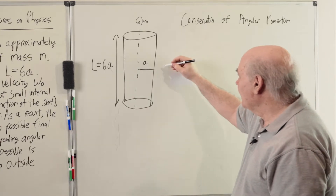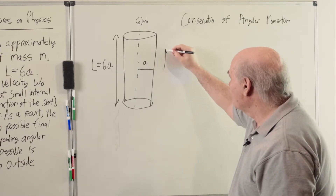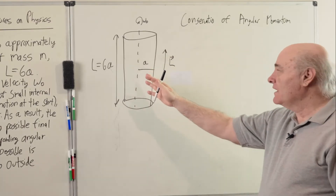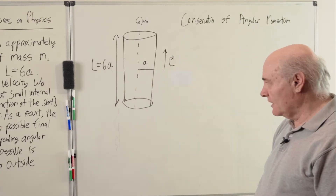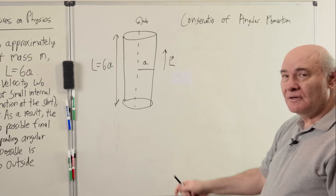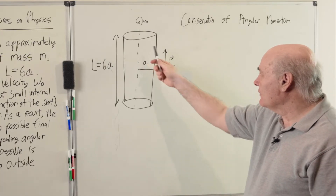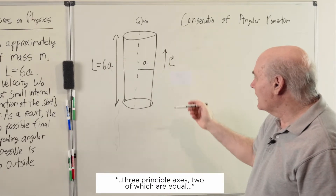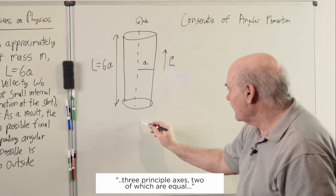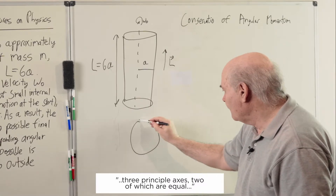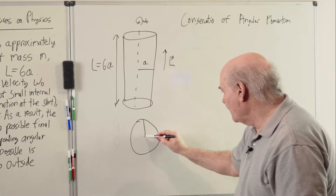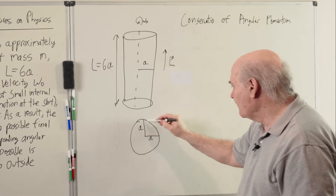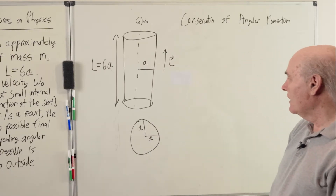Its L vector at the start is like this. No matter where it ends up or how it ends up, it's got to have an L vector like this. Now, because of the symmetry of a cylinder, it has two principal axes. One is the one shown here — that's the long axis. Then if we look at it from the top, it's a circle, and it has these two other axes, both the same length A. These are the principal axes of rotation.